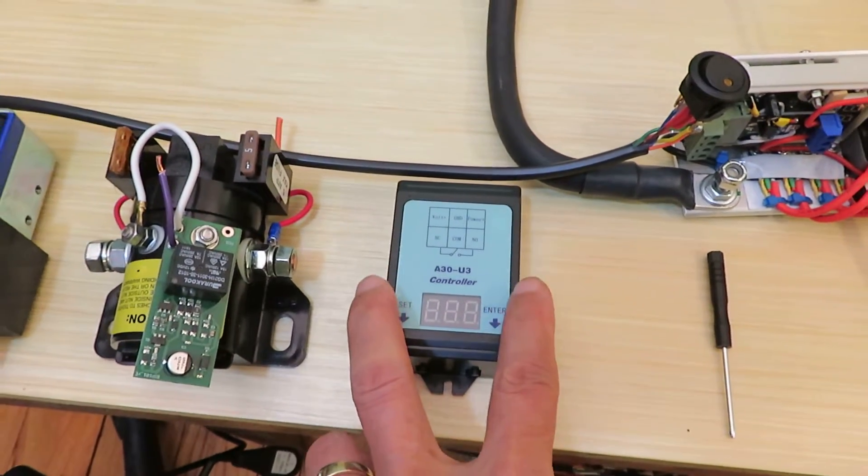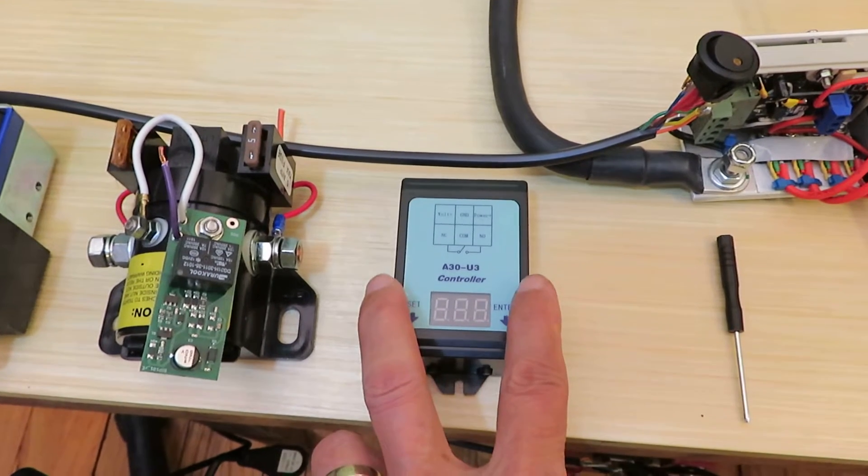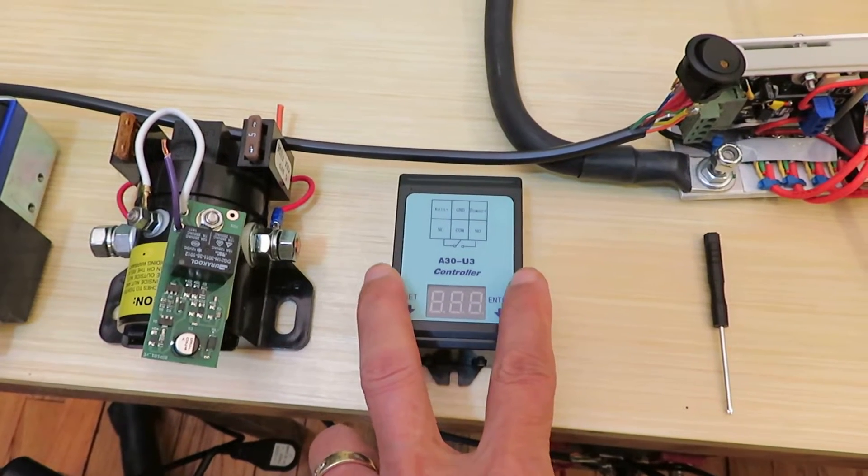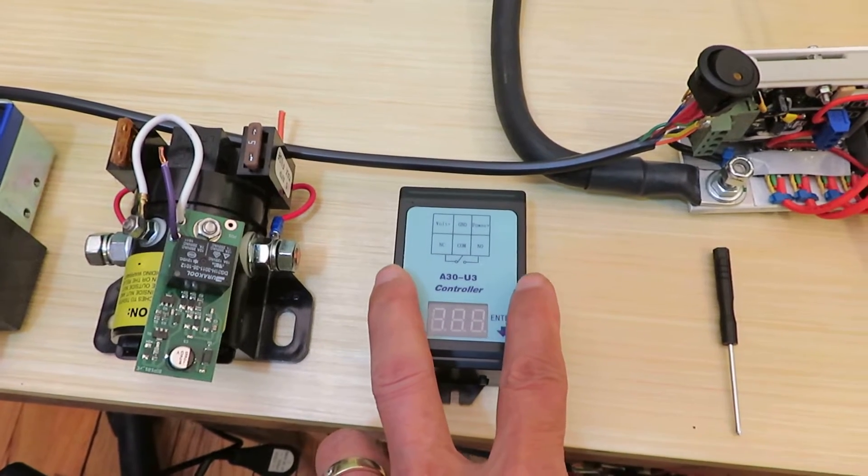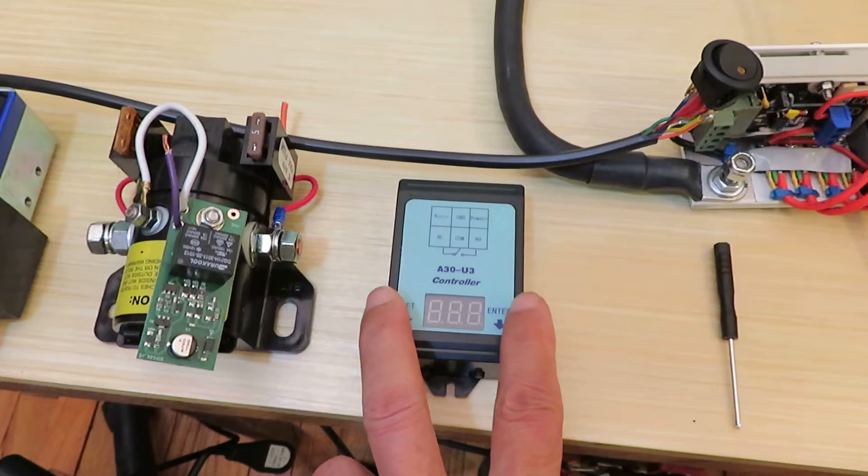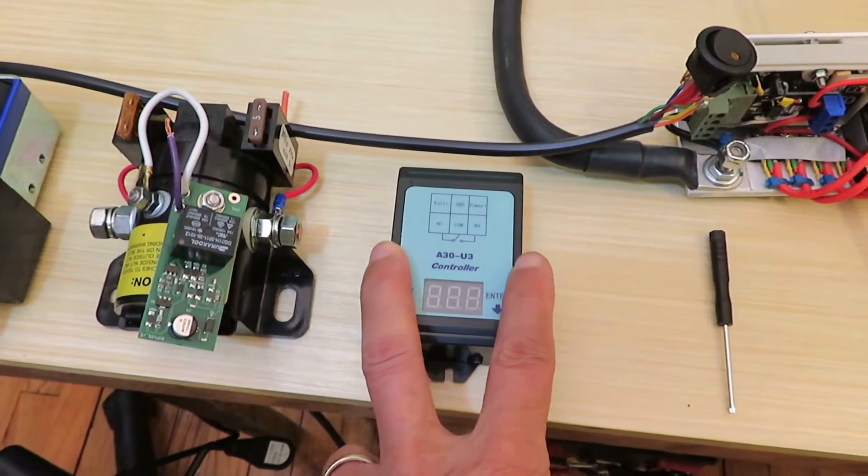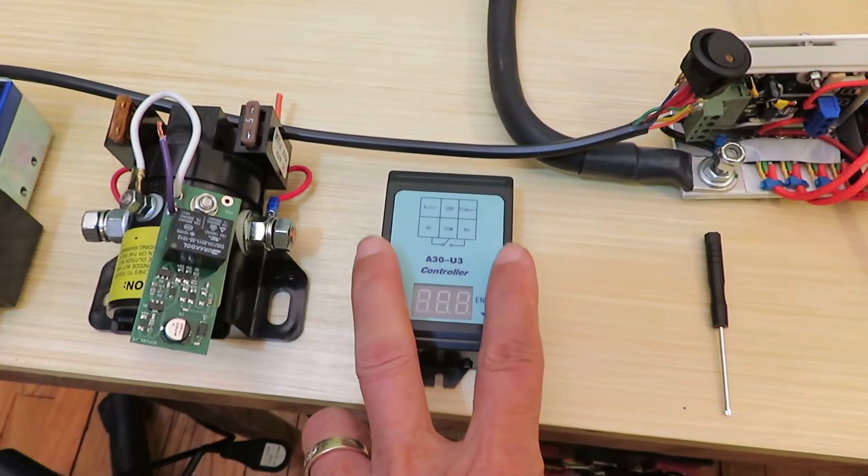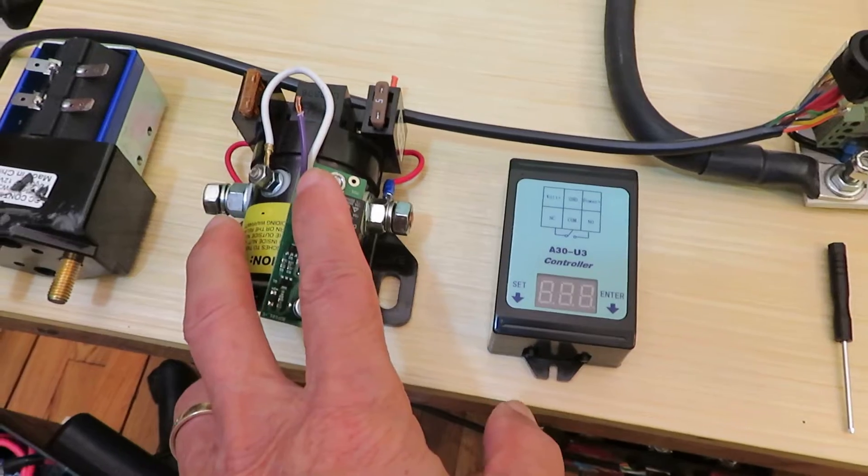So 30 amps actually is all the DC current I would need in my class B RV. Most of the time I don't have everything on so I only use less than 10 amps at a time. So this 30 amps works good and this is being used currently replacing this one.